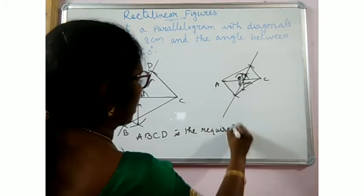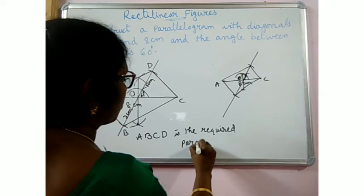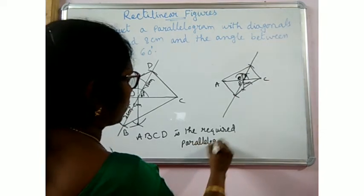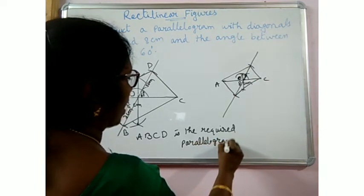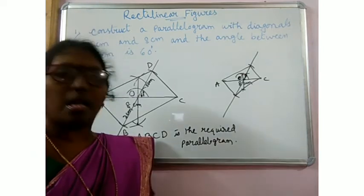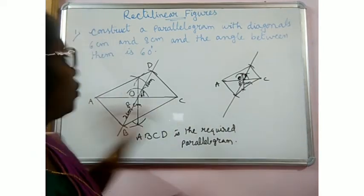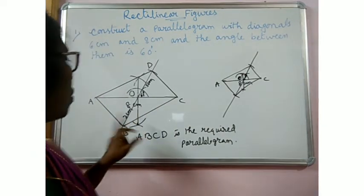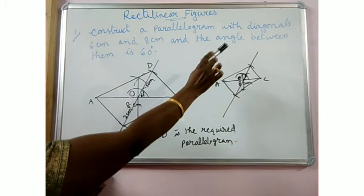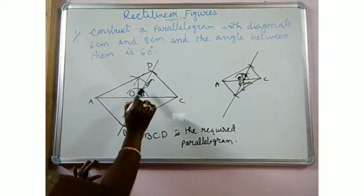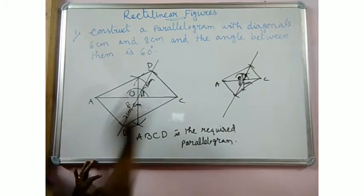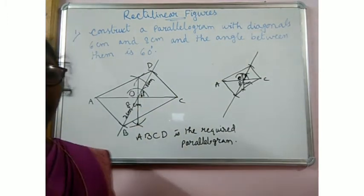For any construction, draw the rough diagram first. Try to understand and think how to do it, and then do. When two diagonals and the angle between them are given, you can do it this way.